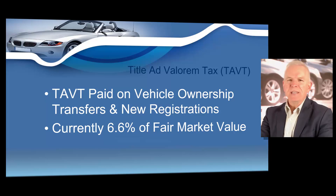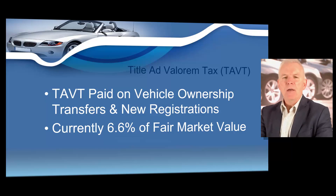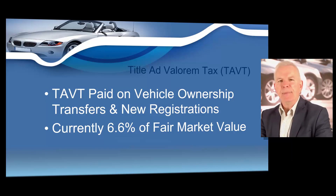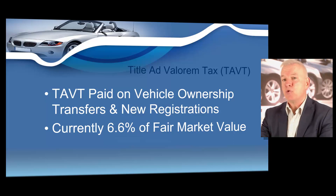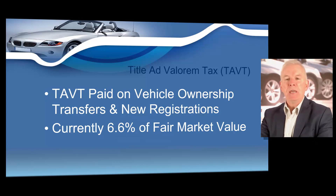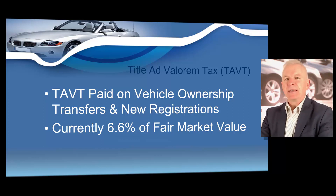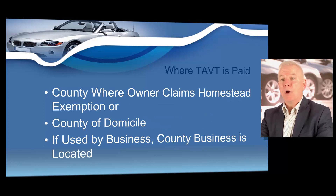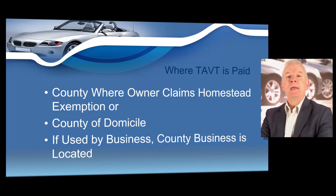Before we start going over TAVT, I want you to be aware of a term called "functionally located." The term functionally located means located in the county in the state of Georgia for 184 days or more during the immediately preceding calendar year. Each motor vehicle owned by a resident of this state shall be returned — meaning the TAVT has been paid — either in the county where the owner claims a homestead exemption, or if no homestead exemption is claimed, in the county where the owner lives.